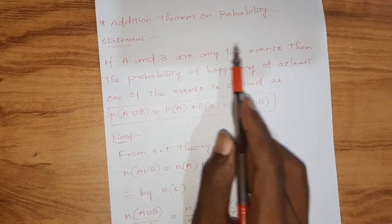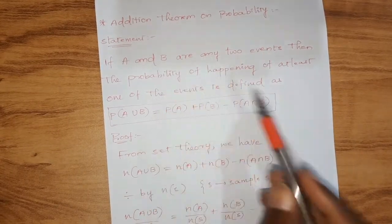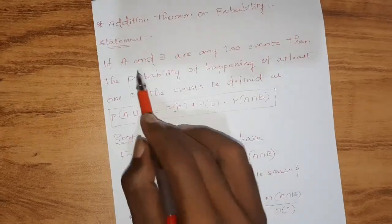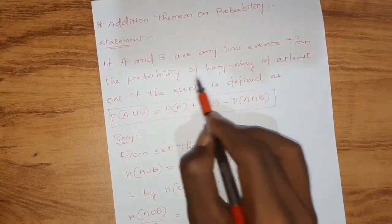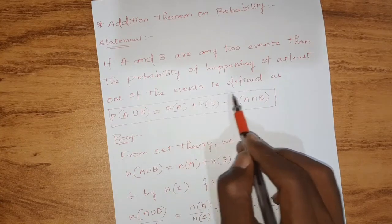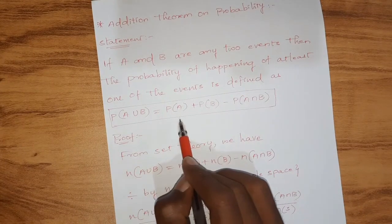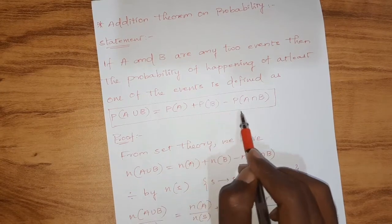So what is addition theorem on probability? We are going to discuss the statement and we are also going to see the proof. So what is the statement? If A and B are any two events, then the probability of happening of at least one of the events is defined as P of A union B is equal to P of A plus P of B minus P of A intersection B.